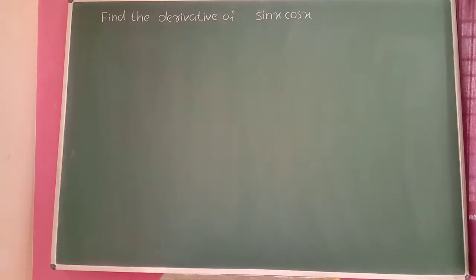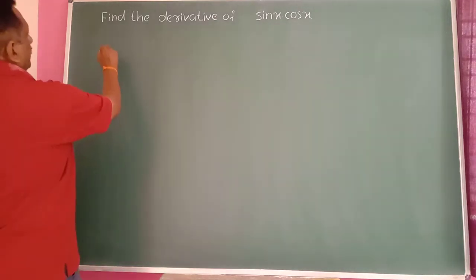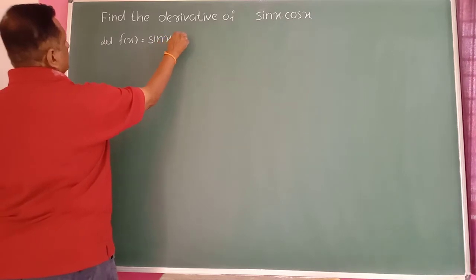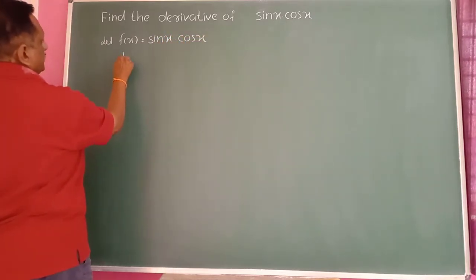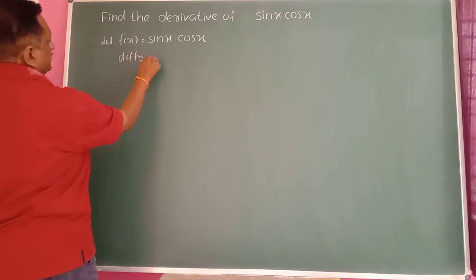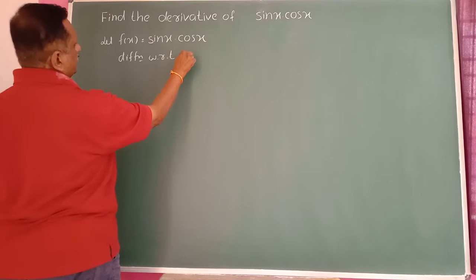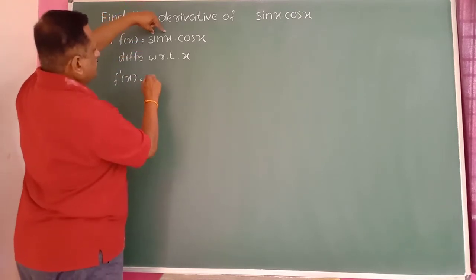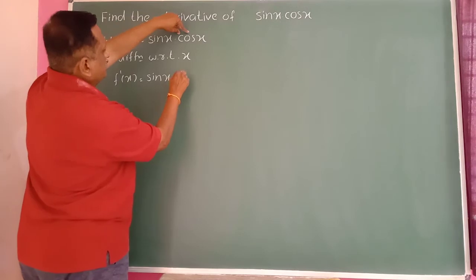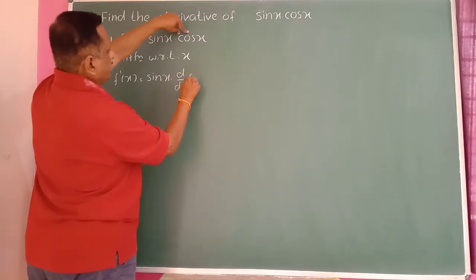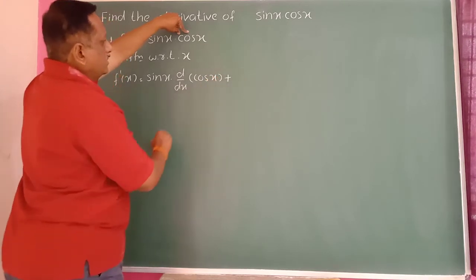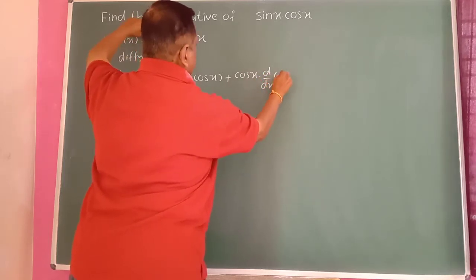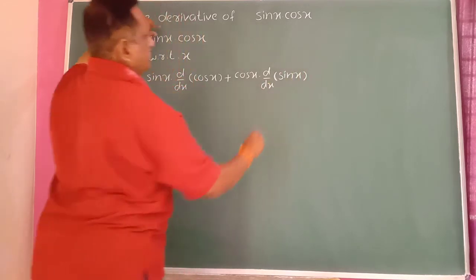Find the derivative of sin(x) times cos(x). Let us consider f(x) equal to sin(x) times cos(x). Differentiating with respect to x, we apply the product rule. So f'(x) equals: first function sin(x) into differentiation of the second function d/dx of cos(x), then plus cos(x) written as it is, into differentiation of the first function sin(x).